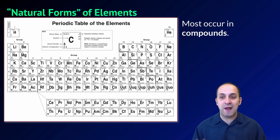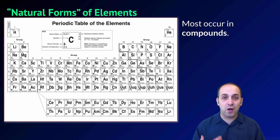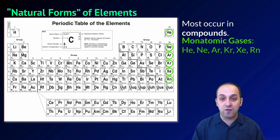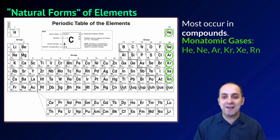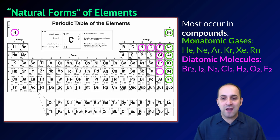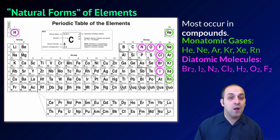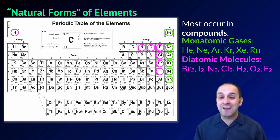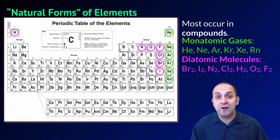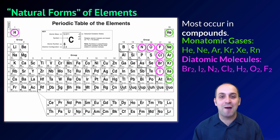Another way to think about the elements is how they occur naturally. Very few elements occur by themselves; most occur in compounds. Some elements that do occur by themselves exist as gases. All of the group 18 elements — because of their electron configurations — do not bond, and so they're known as the noble gases; they all exist as single atom units. There are also seven diatomic elements: bromine, iodine, nitrogen, chlorine, hydrogen, oxygen, and fluorine. Because of their electron configurations, they very frequently pair up with each other. The easiest way to remember these seven is to spell out the name 'Brinkelhoff,' and you'll always have the seven diatomic molecules.